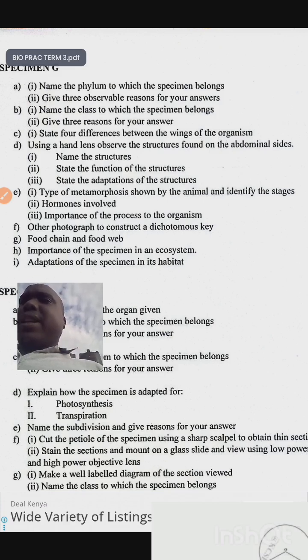State four differences between the wings of the organism specimen. Whichever letter will be used, using a hand lens, observe the structure found on the abdomen side. Name the structure, state the function of the structures, state the adaptations of the structures.